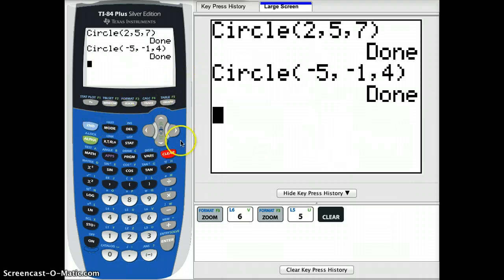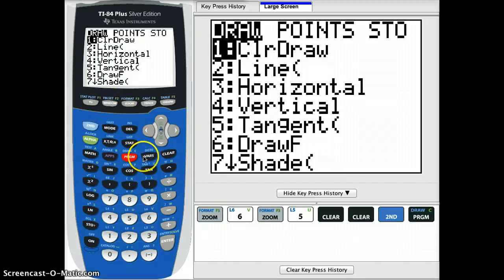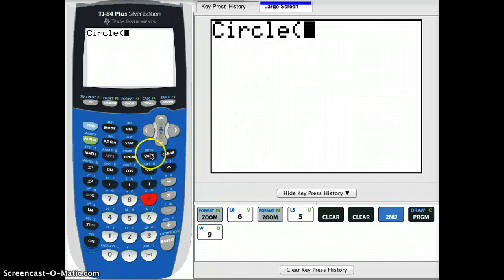So what I want to do is go back to the home screen, and to get those circle functions you just saw, you're going to press 2nd and then the program button, and then you're going to go down to number 9. Number 9 is the circle drawing tool.